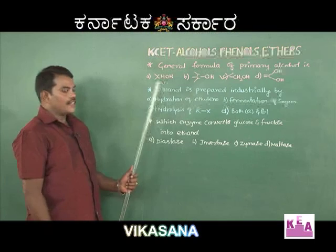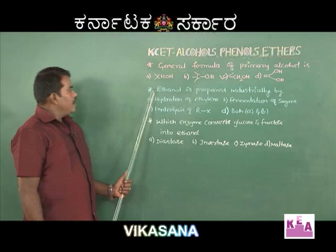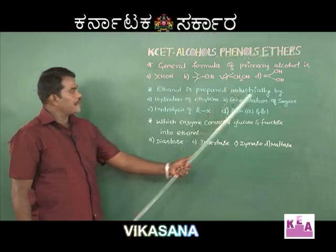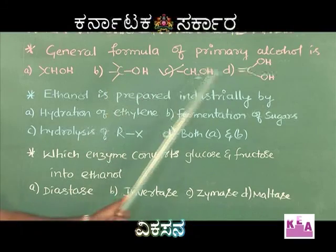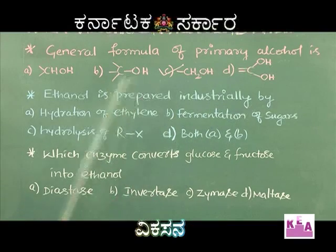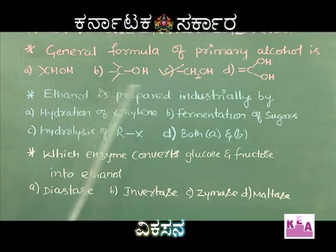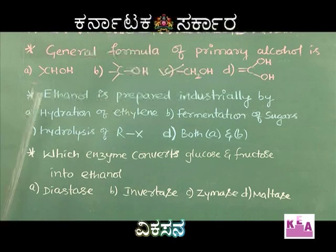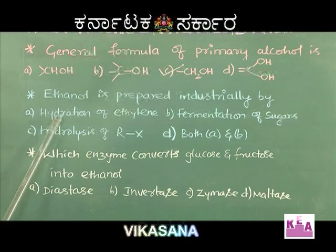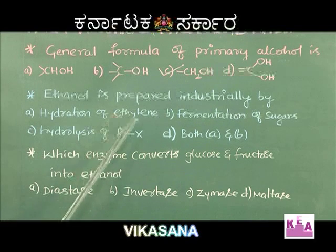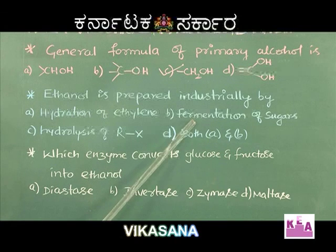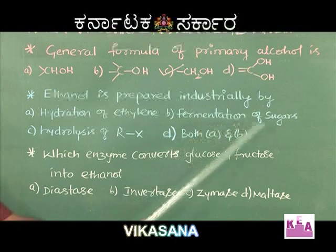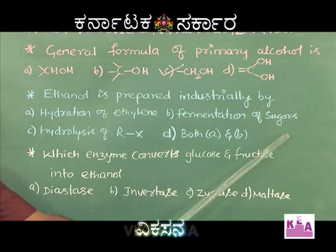Next question: ethanol is prepared industrially by — option A, hydration of ethylene; option B, fermentation of sugars.